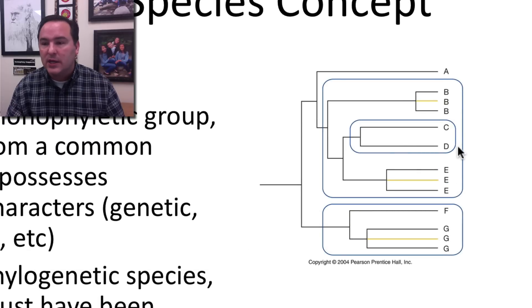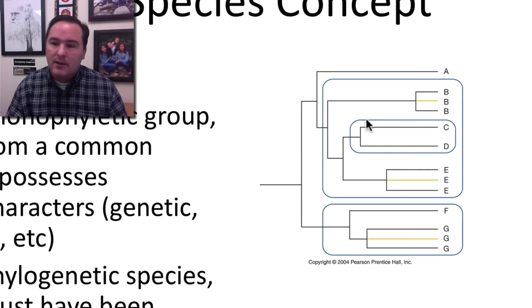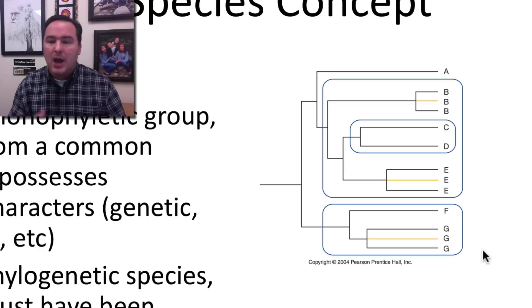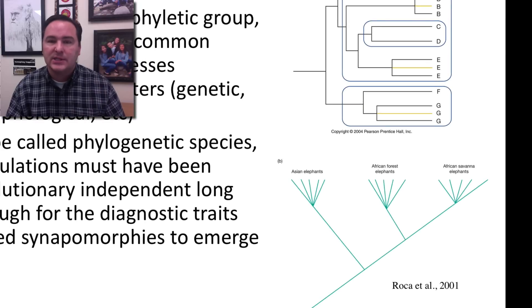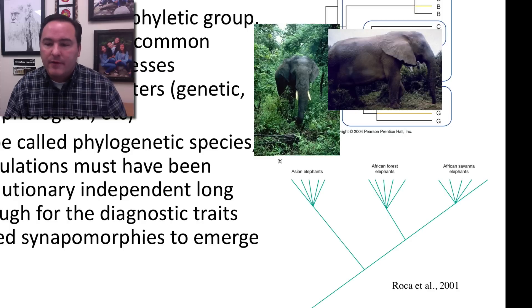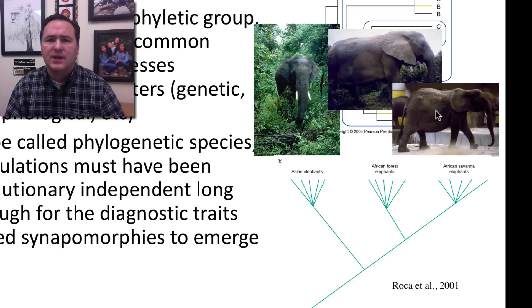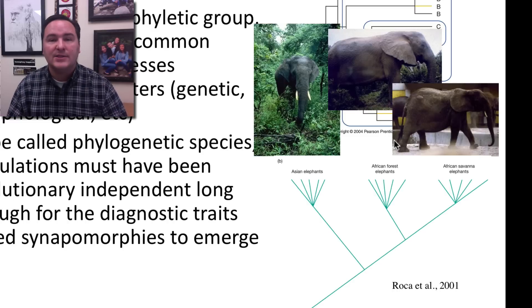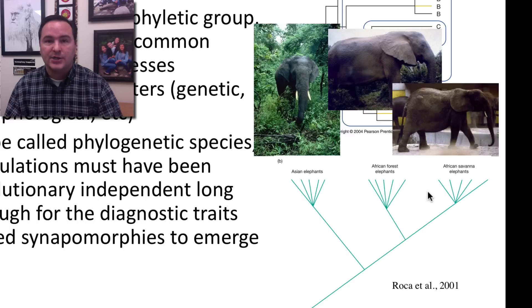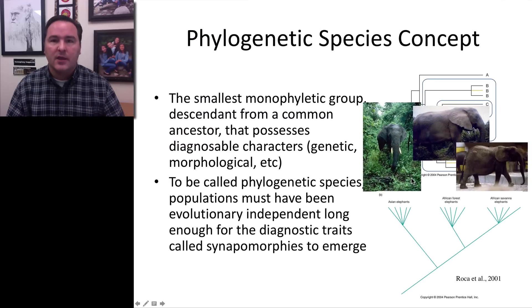Looking at a tree, you might call C and D one species and F and G another, though it's still not entirely black and white where you draw the lines. A real example is elephants: there are three distinct populations — Asian, African forest, and African savannah elephants. There was controversy about whether the African savannah and forest elephants were one or two species. A phylogenetic analysis showed that all forest elephants grouped together on one branch and all savannah elephants on another — good evidence supporting three distinct species of elephants alive today.